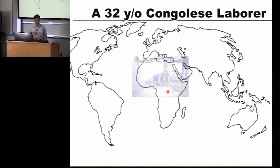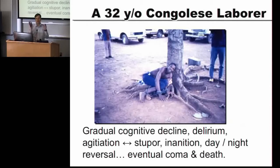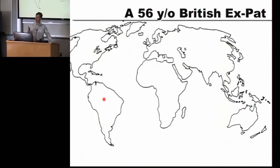Case number one: a laborer from the Congo. This is a case from the WHO TDR. He is a young man, previously healthy, who then starts to go crazy — gradual cognitive decline, delirium, agitation. Sometimes in the daytime he's very sleepy; at nighttime he's agitated and difficult to control. Ultimately, he goes into a coma and dies. In the photograph, you can see he is bound with rope by his hands and feet to the roots of a tree, because his family cannot control him and they are terrified he will run into traffic.